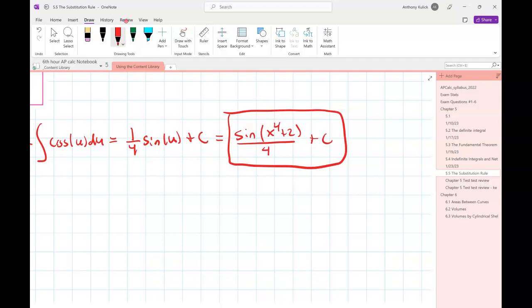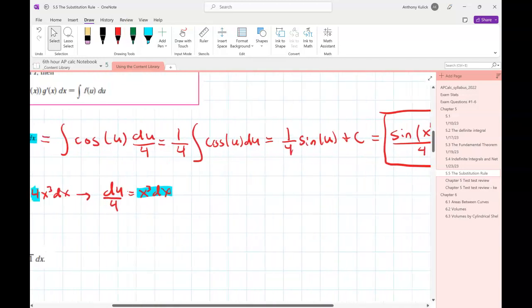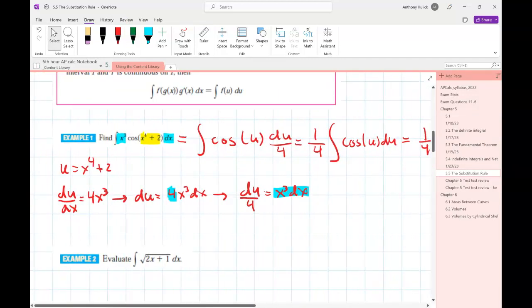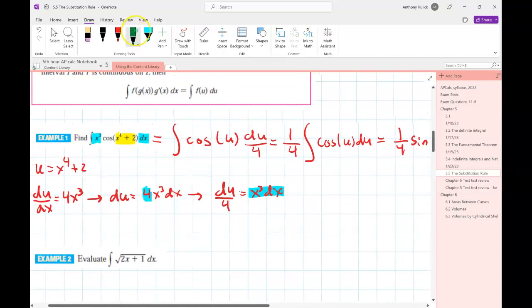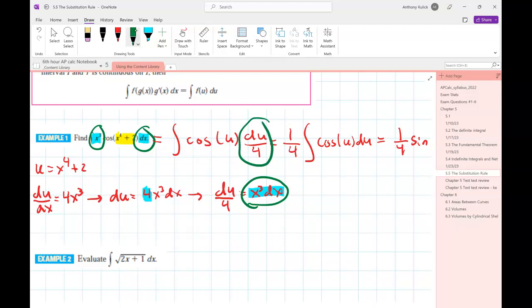So sometimes there may be an extra constant left over, right? All we do is we divide it over, package it together with the du, and it just drops right in and it's no big deal. Yes? So what happened to the x cubed that we started with? So the x cubed that we started with got substituted away as part of my du over 4. Okay. Right? When I plugged in the du over 4, I got rid of the x cubed and the dx.